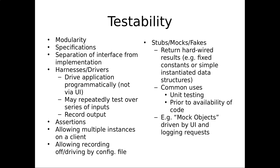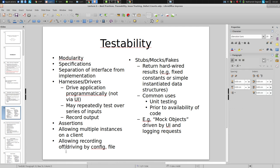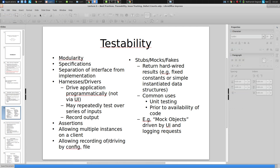Mechanisms for harnesses or drivers — things to drive your UI, for example — are really valuable. We talked about logging. Stubs, mocks, and fakes are very useful to return hardwired results. Allowing multiple instances on a client, so a given client is not limited to one instance, gives flexibility for debugging with greater ease. Recording or driving the system by a config file. And finally, assertions. Why do assertions help with testability? Because you're making sure that the state is what is expected — is it in a sane state at a certain point?